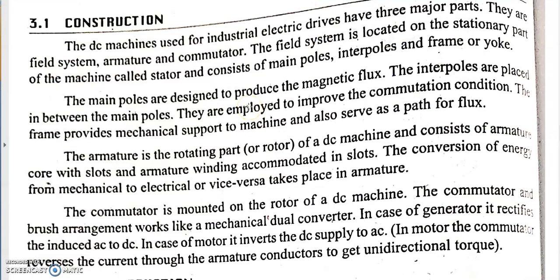In a DC machine there are three major parts: field system, armature, and commutator.